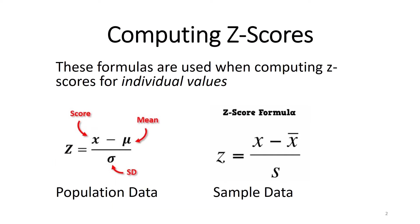Let's talk about computing z-scores. On this slide we see a left formula and a right formula — they're basically the same formula. In each case, it's how do I translate a raw score into a z-score. You start with a score x, subtract the mean, and divide by the standard deviation. The left formula is for population data, the right is for sample data. X minus a mean divided by a standard deviation presents your z-score.